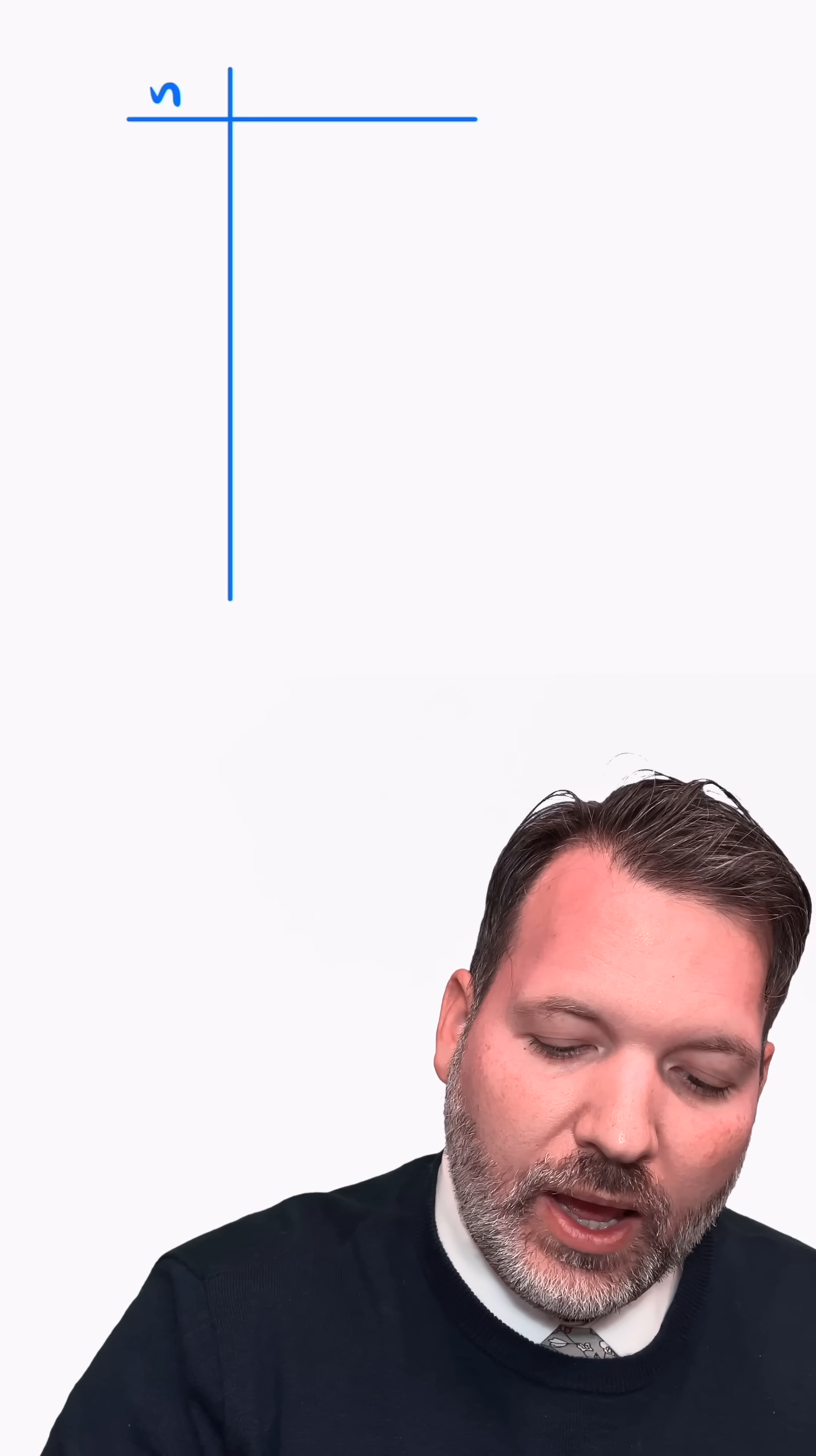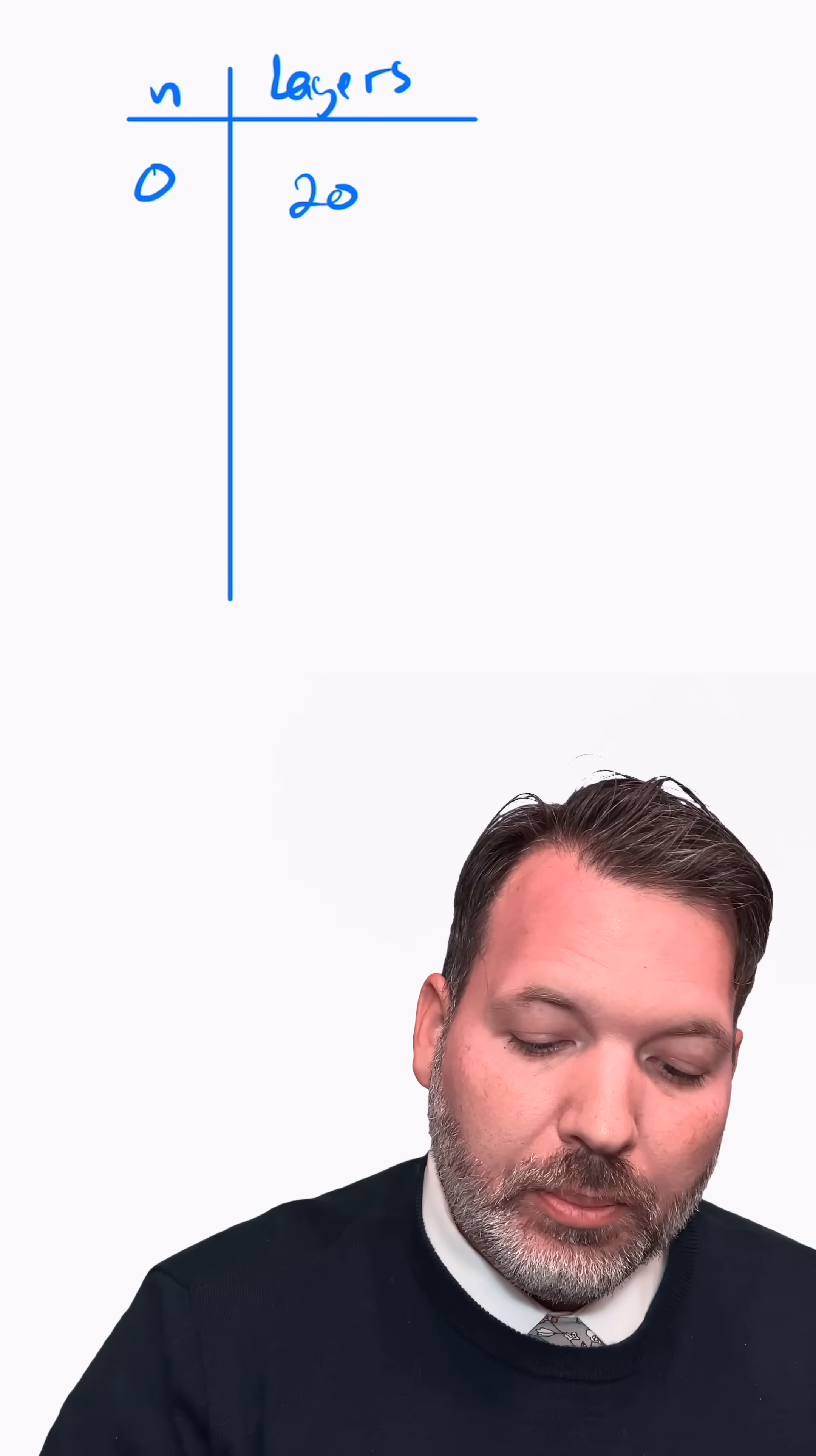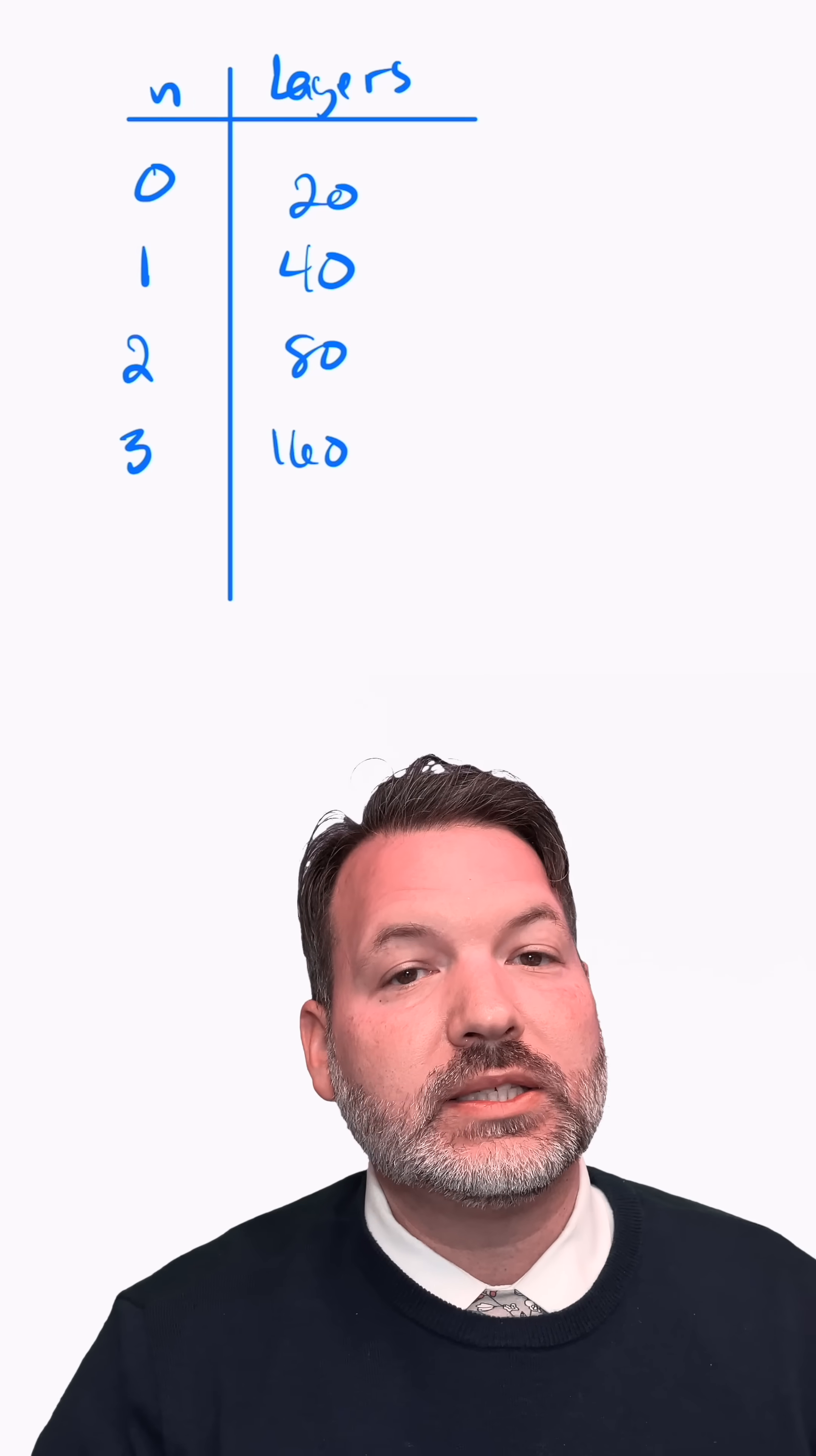So I'm gonna set up a little table here with n, which is the number of the cut that we're interested in. And then over here, we'll just label this layers. So for example, when we haven't cut anything yet, we're already beginning at 20 layers. But then as soon as we make a single cut, we double the total number of layers. And so they go from 20 to 40. A second cut after that would go to 80 and another cut after that would go to 160.